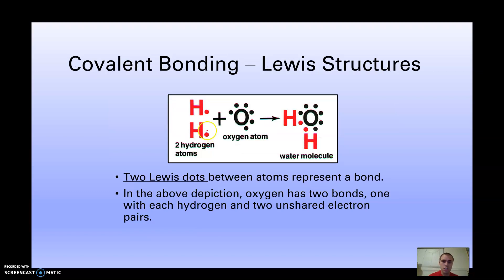Covalent bonding is different — we share electrons. This hydrogen goes here and this hydrogen comes over here, and now we share these electrons. H, H, and O form H2O, which is water, which is a covalent molecule. Two dots between the atoms represent a chemical bond.